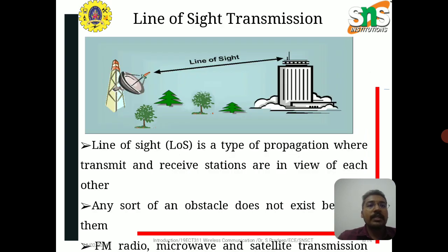Line-of-sight is a type of propagation where transmit and receive stations are in view of each other, and no obstacle exists between them. FM radio, microwave, and satellite transmissions are examples of line-of-sight transmission.